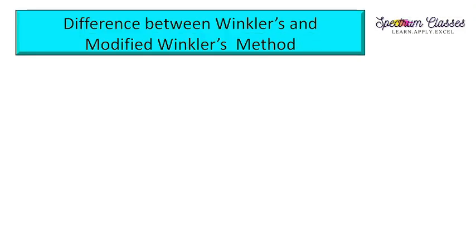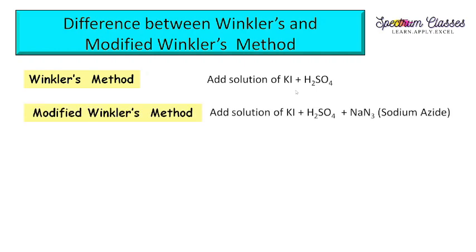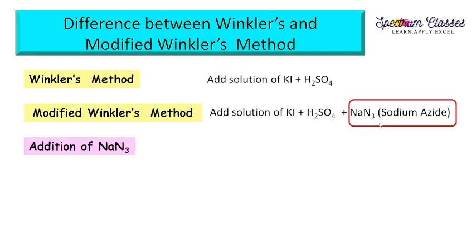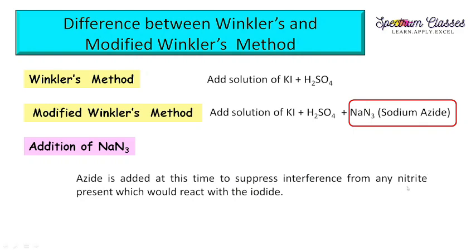Now coming to the differences between Winkler's and modified Winkler's method. In Winkler's method we use two reagents, while in the modified method sodium azide is used additionally. This sodium azide is used because it suppresses the interference by nitrite ions present in the water sample. This suppression is required because nitrite ions may react with iodide ions to produce iodine, causing a positive interference, and we get different results than the actual dissolved oxygen values. To suppress this interference, we add sodium azide.